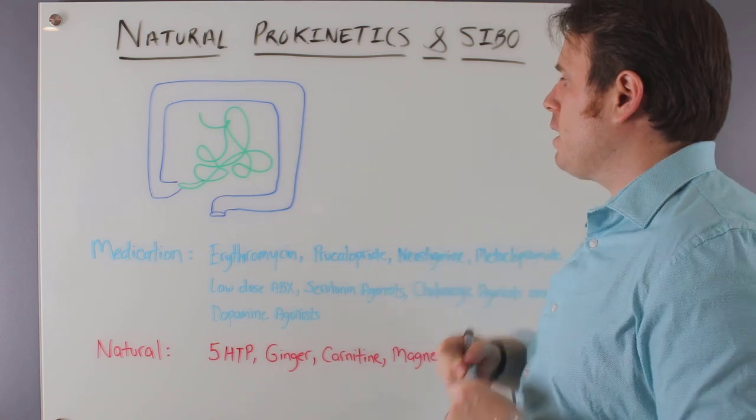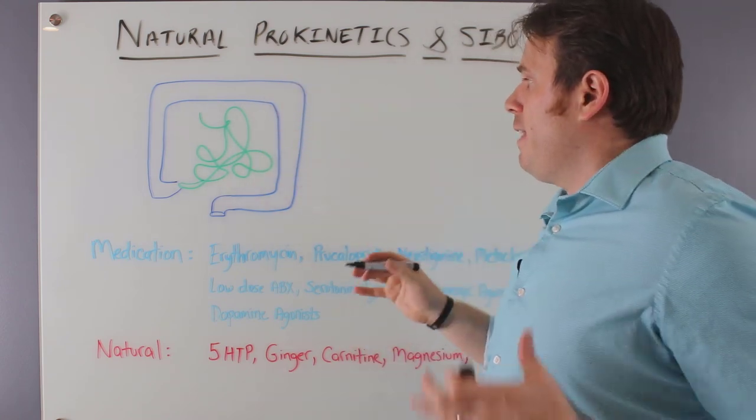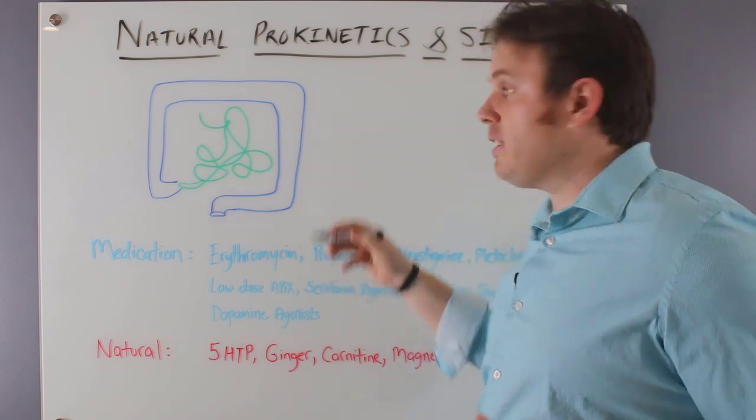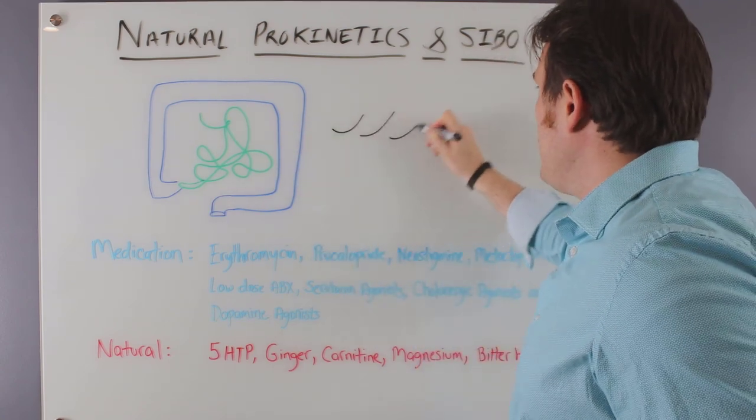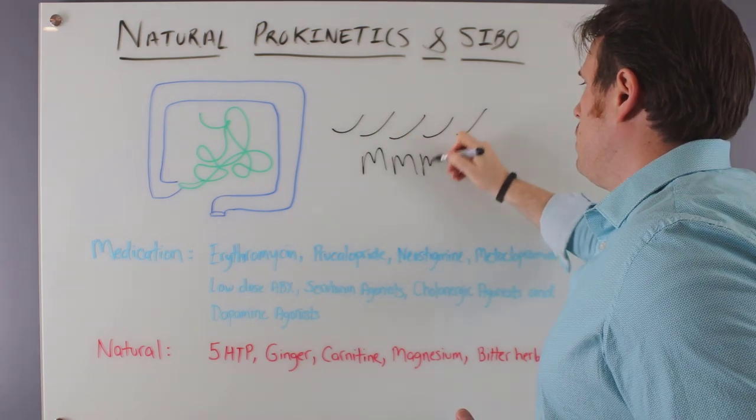So here's our intestinal tract. This is our small intestines in the middle. And essentially food moves through these intestines like a wave-like contraction. And this is known as the migrating motor complex, triple M.